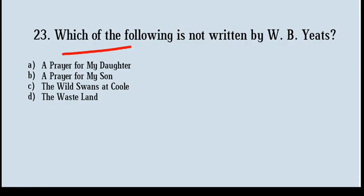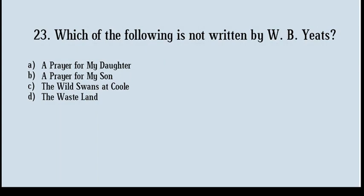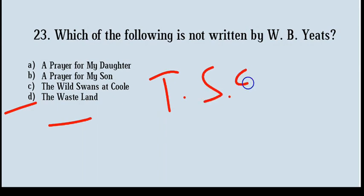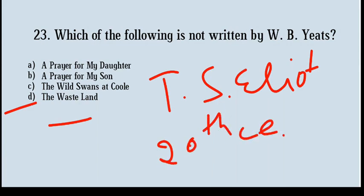Which of the following is not written by W.B. Yeats? Options: A Prayer for My Daughter, A Prayer for My Son, The Wild Swans at Coole, The Wasteland. Correct answer: option number D, The Wasteland. The Wasteland is a poem written by T.S. Eliot, widely regarded as one of the most important poems of the 20th century and a central work of modernist poetry.